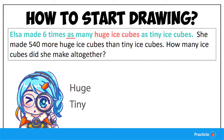Then we have the second 'as'. Looks like the object that comes after it are the tiny ice cubes. So that's how we know that we are comparing the huge ice cubes with the tiny ones.